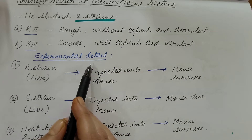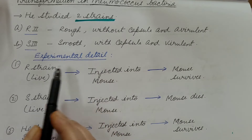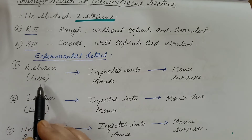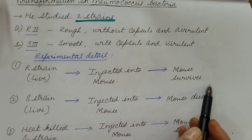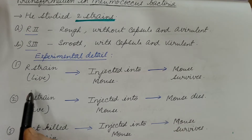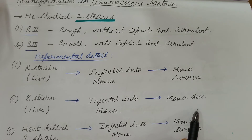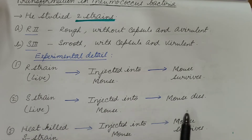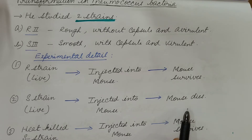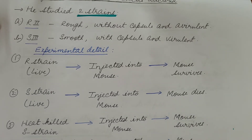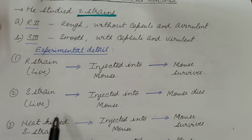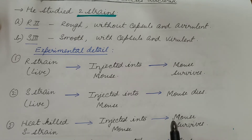Let us see the experimental details. First, Griffith took the live R strain and injected it into the mouse — the mouse survives, meaning no disease was caused. Then the live S strain was injected into the mouse and the mouse dies, because the S strain is virulent and causes pneumonia. Then heat-killed S strain was taken and injected into the mouse — the mouse survives, because the virulent strain is heat-killed and hence does not cause disease.